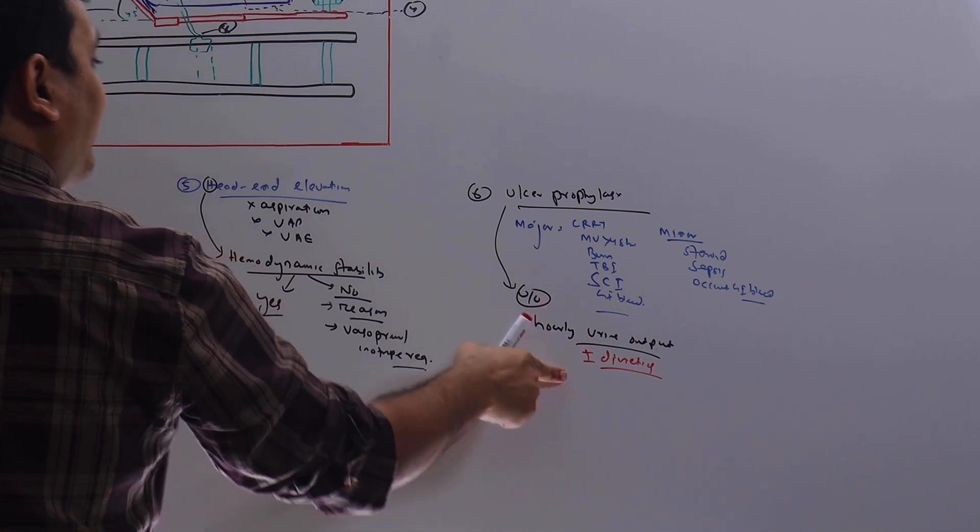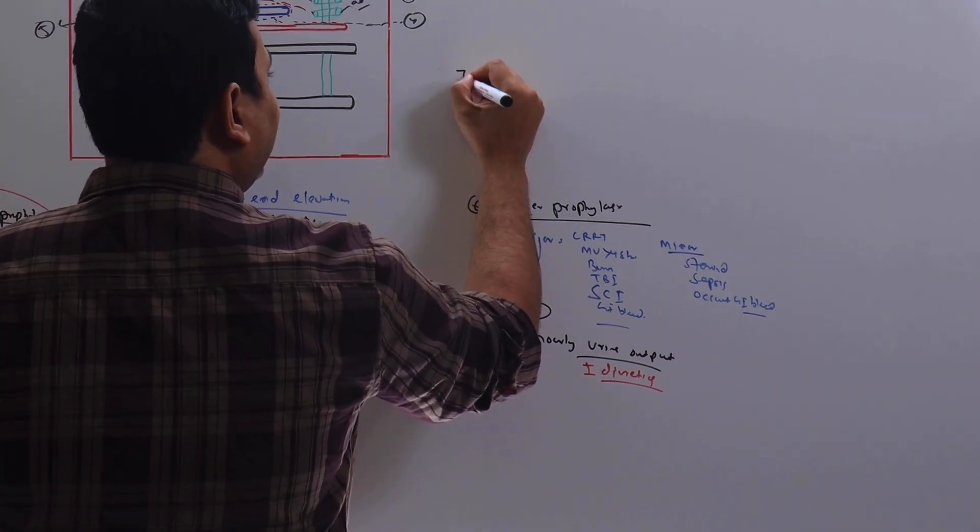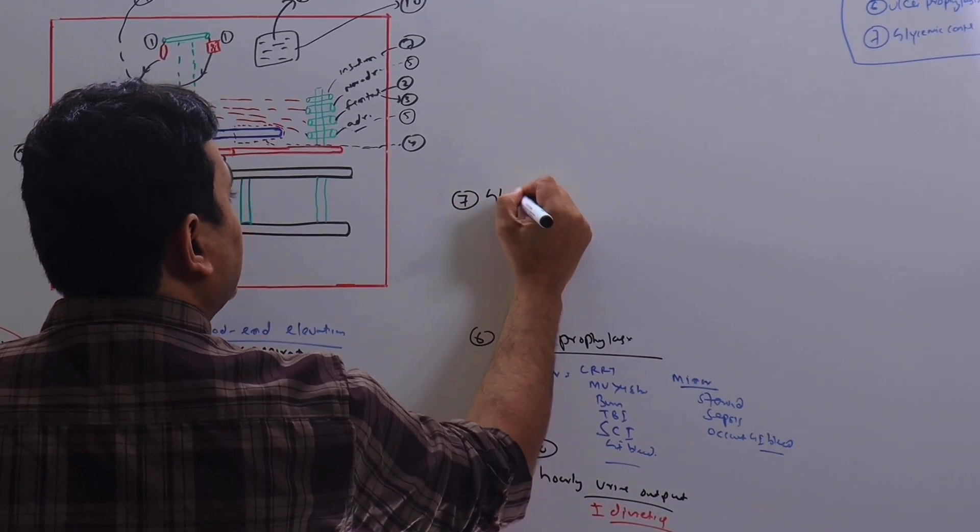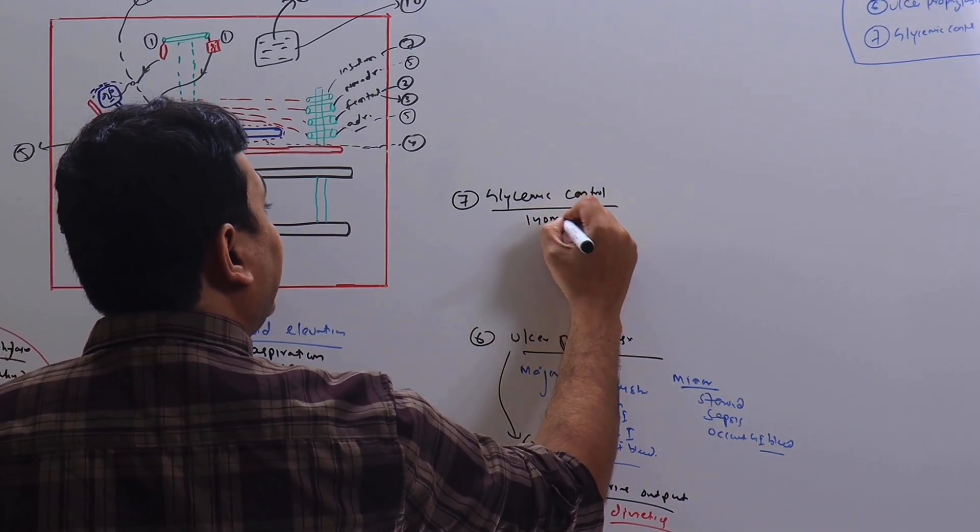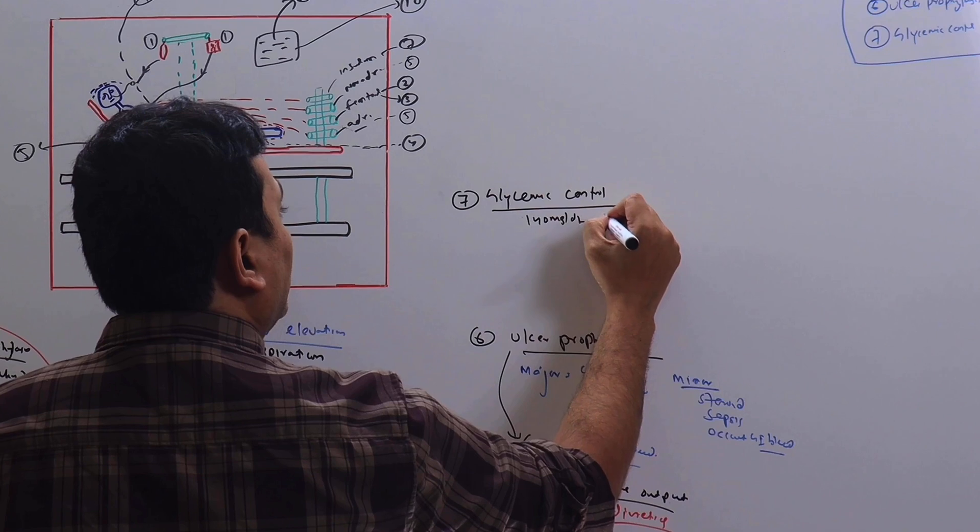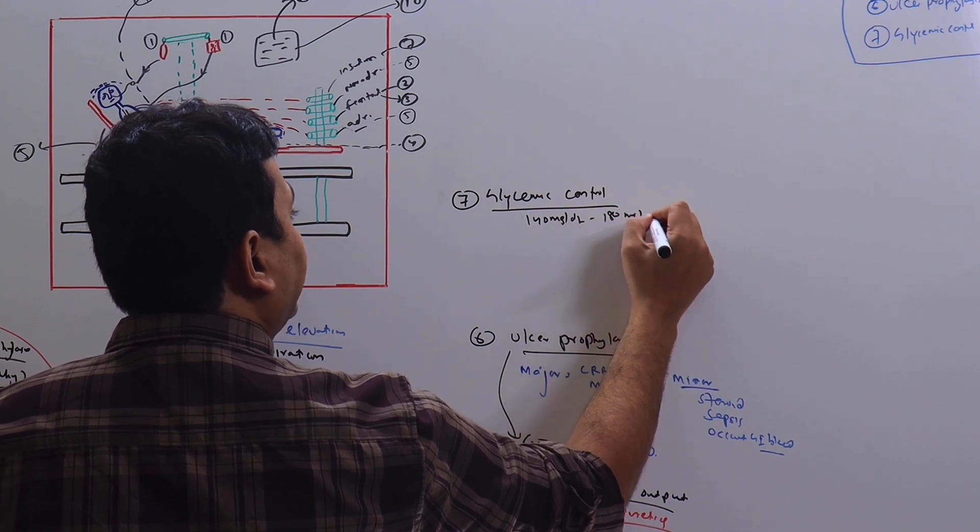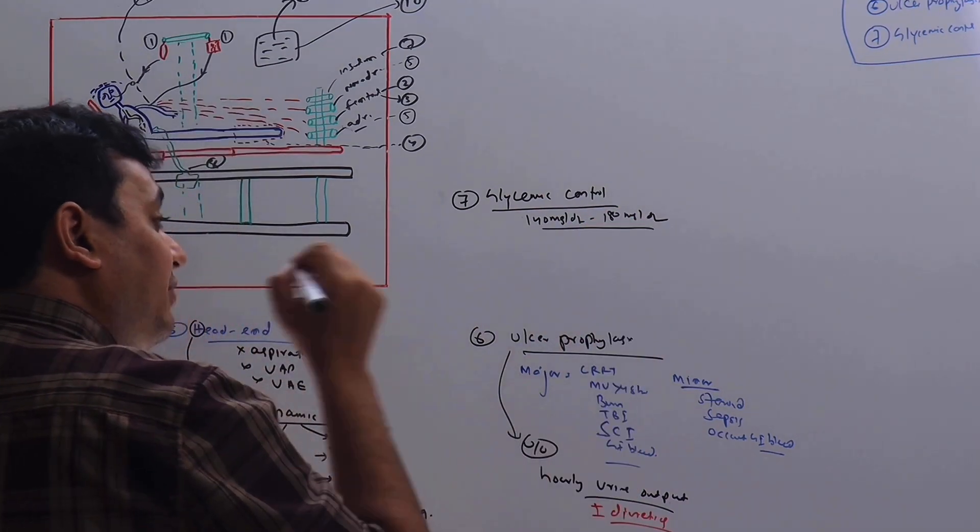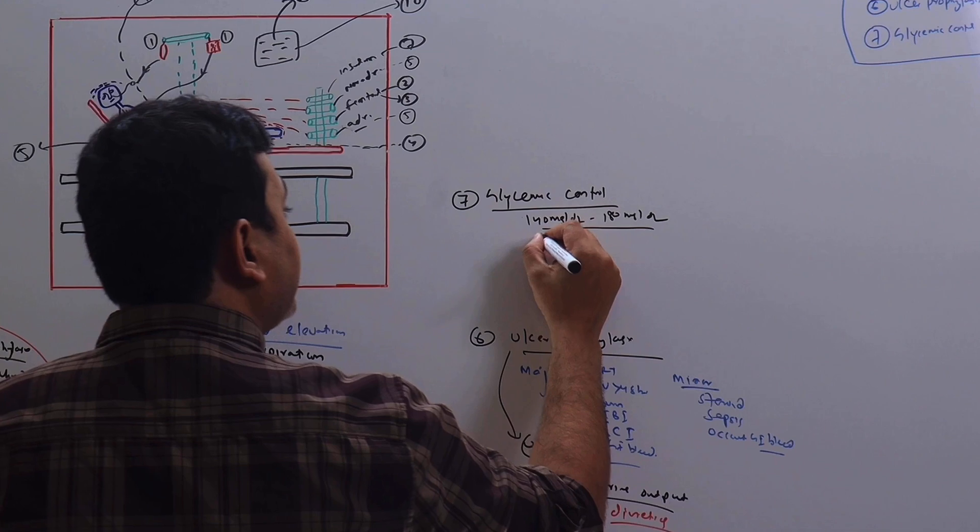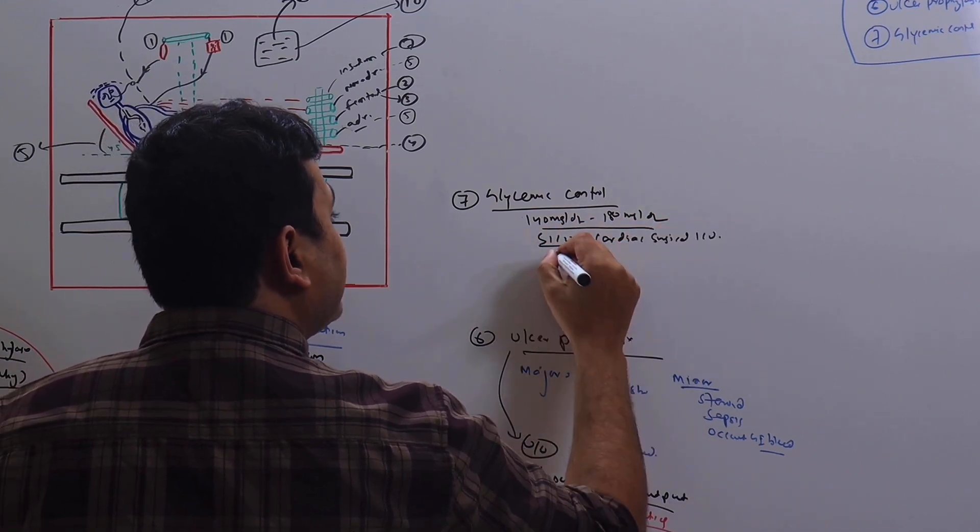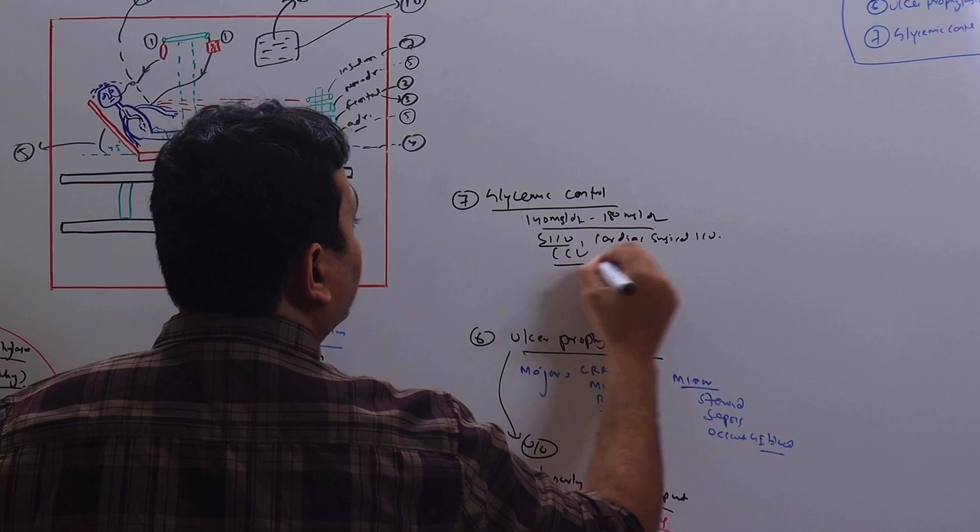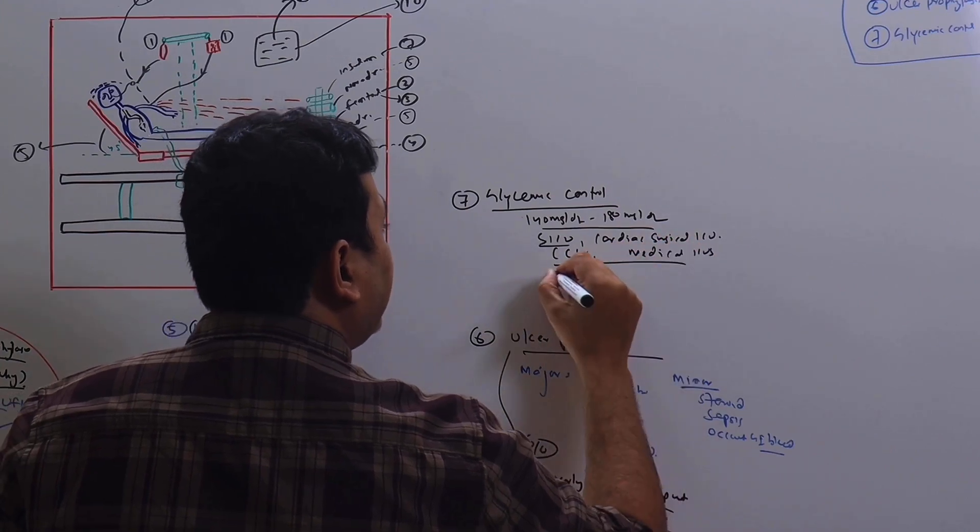Number seven is glycemic control. Glycemic control is very, very important. It has to be maintained between 140 mg per dL to 180 mg per dL. It is especially very important in surgical ICU, in cardiac surgical ICU, in CCU, and of course in medical ICUs. It improves wound healing and boosts immunity, prevents infection.